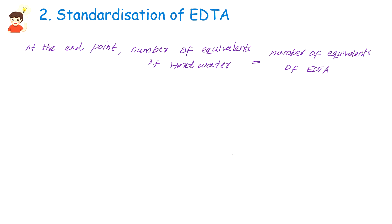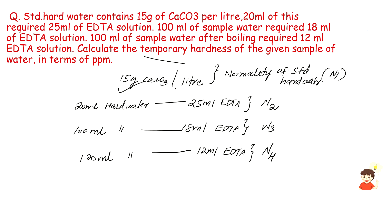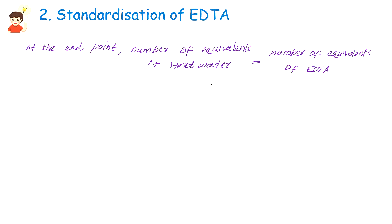The second step is standardization of EDTA. At the end point, number of equivalents of hard water equals number of equivalents of EDTA. First data is 20ml required 25ml EDTA. 20ml times 0.3 normal standard hard water.